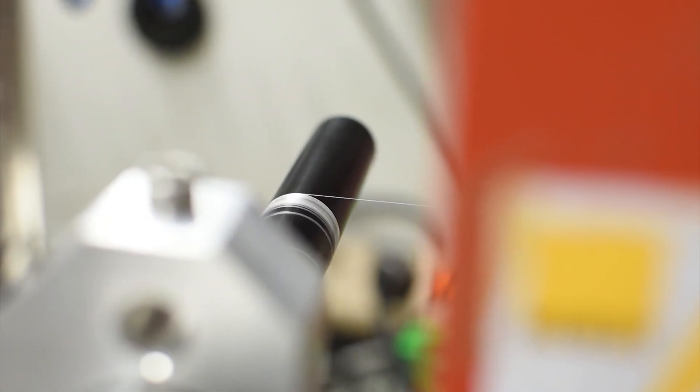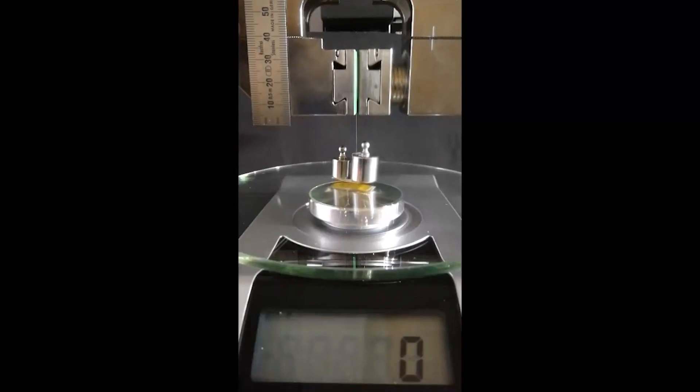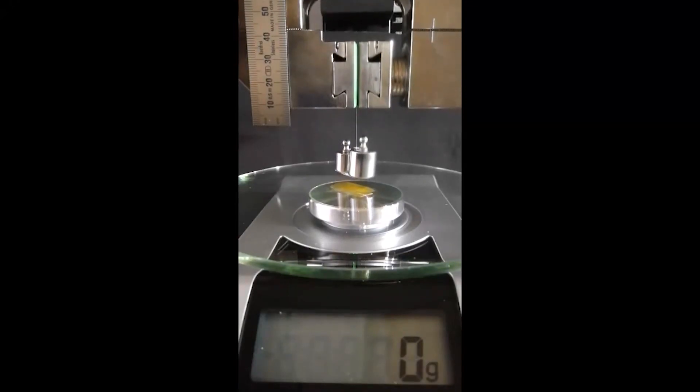Although the resulting fiber weighs much less than a fruit fly, it can lift repeatedly a weight of 30 grams. 30 grams is about 150 times the weight of a fruit fly.